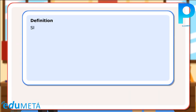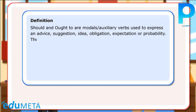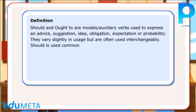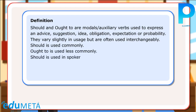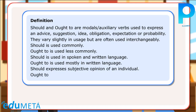Definition: Should and ought to are modals — auxiliary verbs — used to express advice, suggestion, idea, obligation, expectation, or probability. They vary slightly in usage but are often used interchangeably. Should is used commonly; ought to is used less commonly. Should is used in spoken and written language; ought to is used mostly in written language. Should expresses the subjective opinion of an individual. Ought to expresses an objective view and is more emphatic.